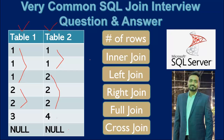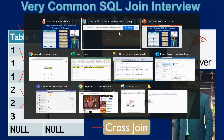When we do the inner join, left outer join, right outer join, full outer join, and cross join, what will be the count of the rows? This type of question is asked very often. Let me quickly go inside the Excel and we will try to understand how we can know how many rows it will be returning.